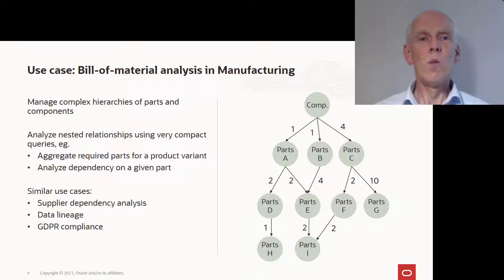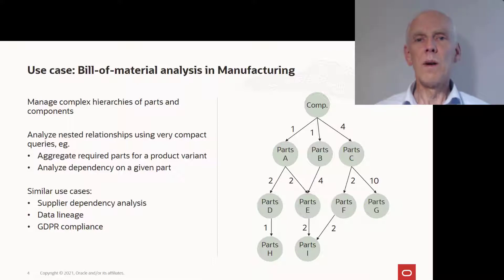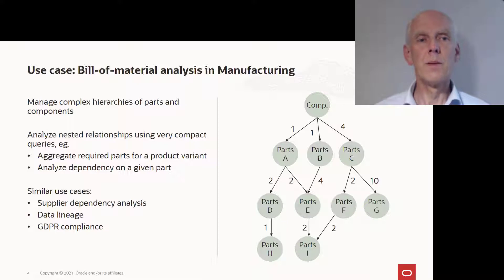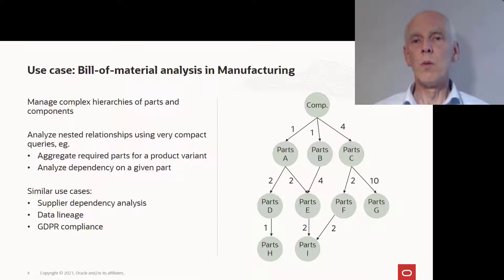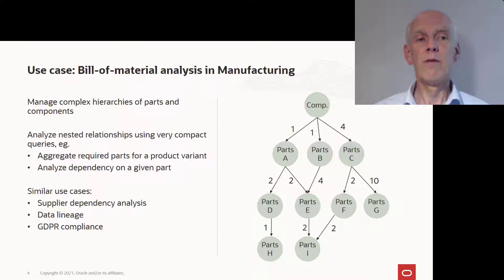Secondly, graph databases are well suited for analyzing complex hierarchies. If you take a manufacturing example, you would typically find complex interlinked bills of material for different products or product variants, especially in automotive where you have lots of variants. Graph databases are very good at search or aggregation along these hierarchies and can help determine, for example, whether the parts in stock are sufficient to build a certain number of products. The resulting queries are usually pretty compact and therefore easy to maintain.